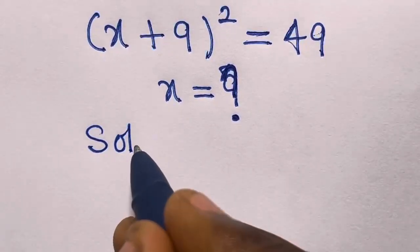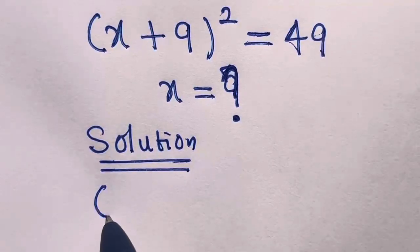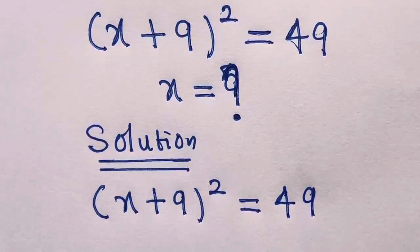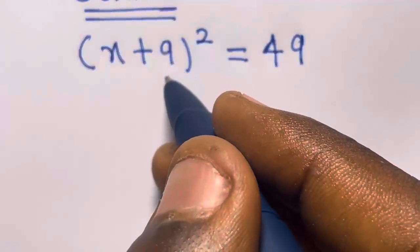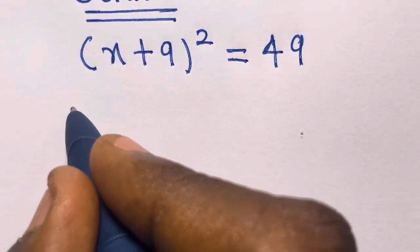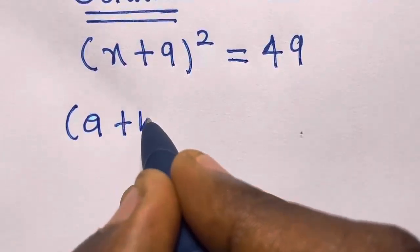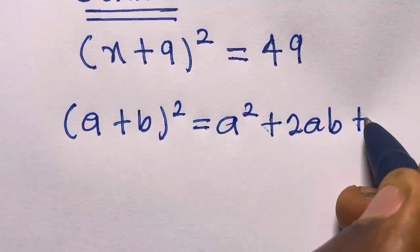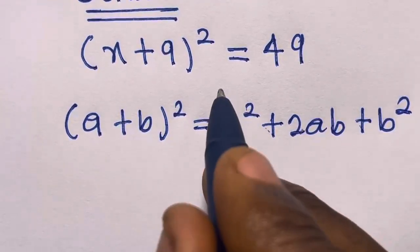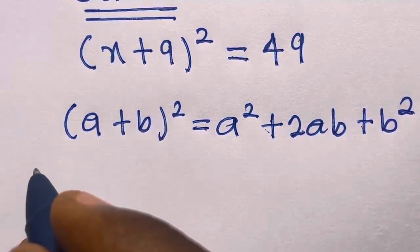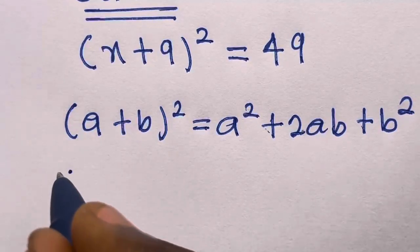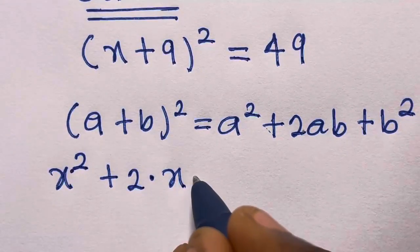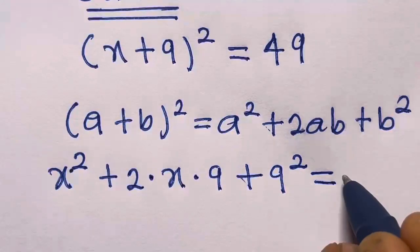Let's say solution. We have x plus 9 squared equals 49. If you look at this, you see that x plus 9 raised to the power 2 is of the form a plus b squared, which is equal to a squared plus 2ab plus b squared. Applying this, we have x squared plus 2 times x times 9 plus 9 squared equals 49.